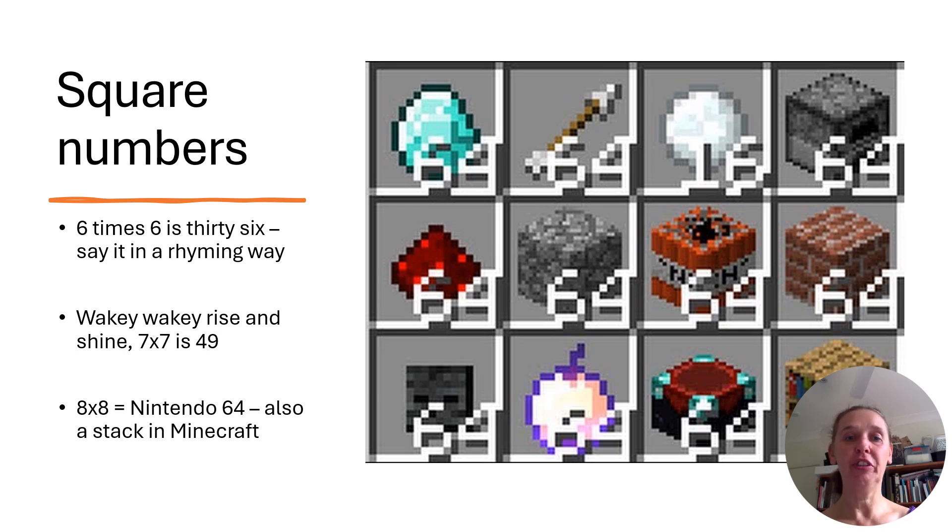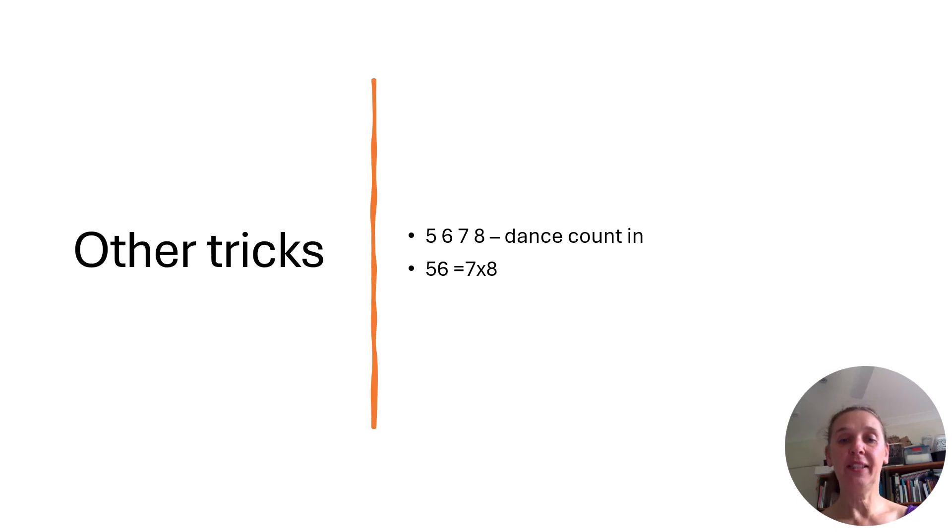And once you've got those locked in, you can use them to work out other times tables. As I said before, it's not about knowing every single times table fact by rote really, really quickly for some students, but having a way of working it out. So other tricks, five, six, seven, eight is what we count in when we're dancing. So 56, it's the same as seven times eight. So if you just flip those over, you can get five, six, seven, eight. And students pick that one up really easily.